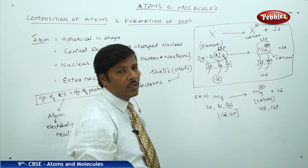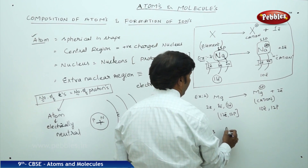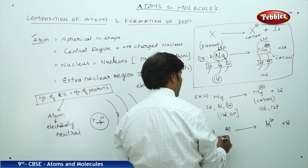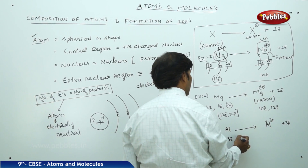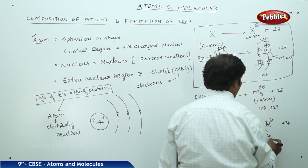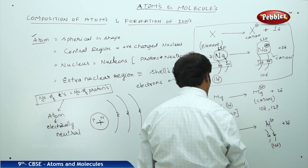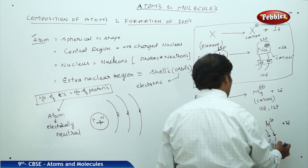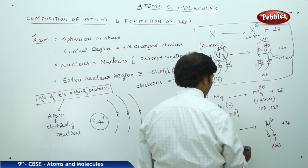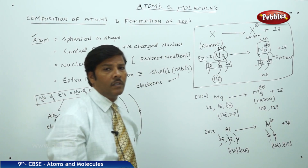Once the cation is formed, the number of electrons is not equal to the number of protons. For aluminium: electron distribution is 2, 8, 3 — these 3 valence electrons are lost, forming Al3+ with 2 and 8 electrons remaining, giving 10 electrons total against 13 protons. Number of electrons are not equal to number of protons once the cation is formed.